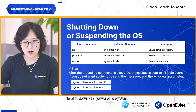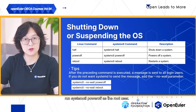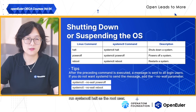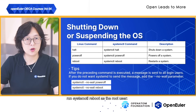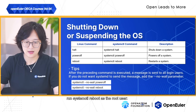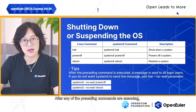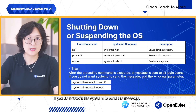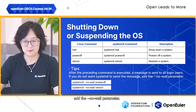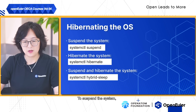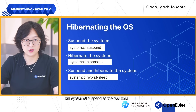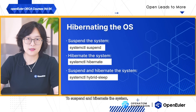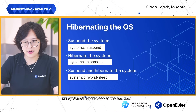To shut down and power off a system, run systemctl poweroff as the root user. To shut down without powering off, run systemctl halt. To restart the OS, run systemctl reboot. After any of these commands, a message is sent to all login users; add the --no-wall parameter to suppress it. To suspend the system, run systemctl suspend; to hibernate, run systemctl hibernate; to do both, run systemctl hybrid-sleep.